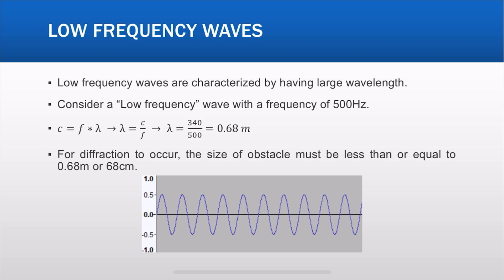So what are low frequency waves? Low frequency waves are characterized by having a large wavelength. As you can see in the picture, the wavelength is pretty large. Let's consider a low frequency wave with a frequency of 500 Hertz. What is the wavelength? You can use the relation c equals f times lambda, where c is the speed of sound, f is the frequency, and lambda is the wavelength. Using the speed of sound as 340, you get 0.68 meter.